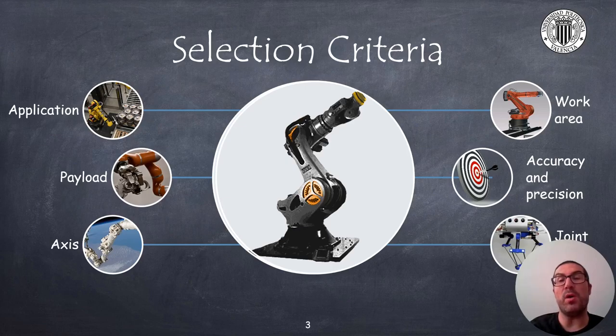Then we will also have other criteria such as payload, number of axes, work area, robot accuracy and precision, as well as joint limits. All these criteria will help us to reduce the number of options to a few robots.